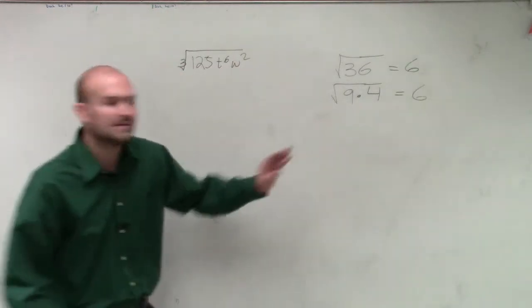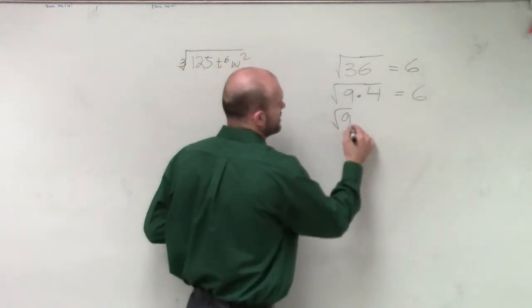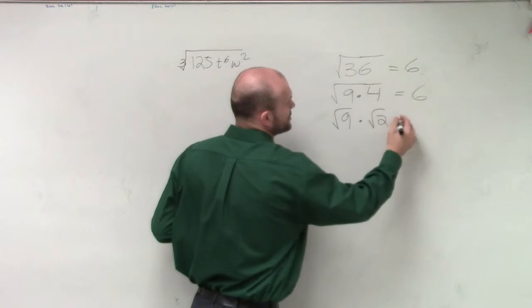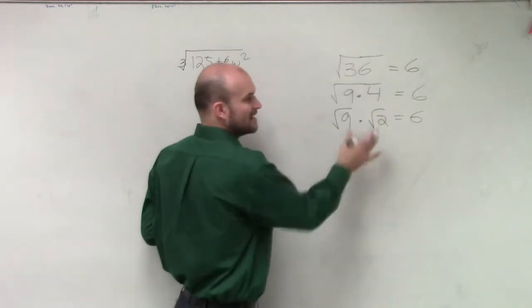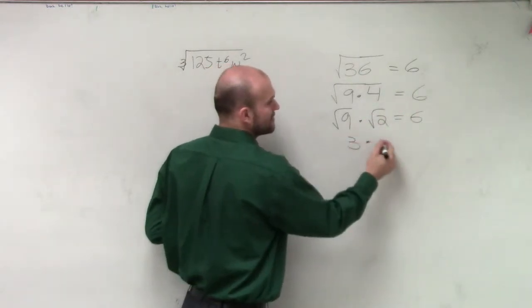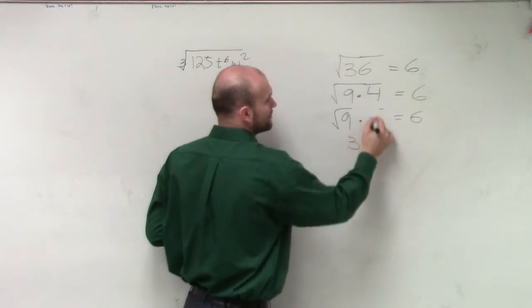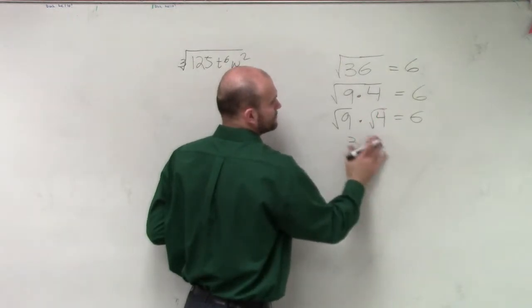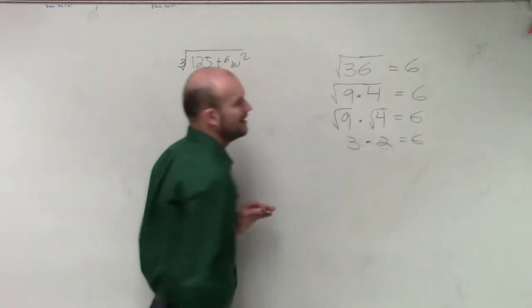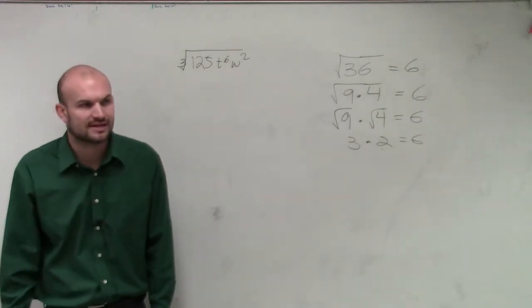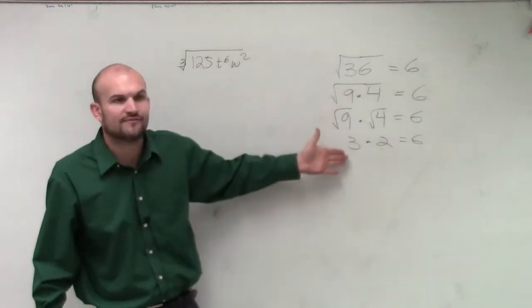But what I want you guys to understand is I can break this up into the square root of 9 times the square root of 4, and that will still equal 6. And I can even take the square root of that, the square root of 4, and that can equal 6. So there's really no difference.